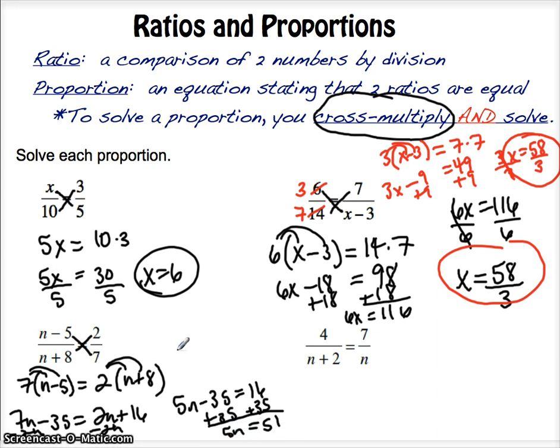add the 35, you get 5n equals 51. So, when you divide by 5, you'll get 51 over 5, and you can just leave it like that. Okay? An improper fraction is fine, so 51 over 5.